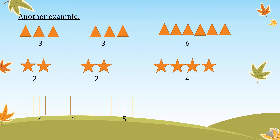Then the sum of the first group and the second group is a group of six triangles. The sum of the two groups of stars is a group of four stars.